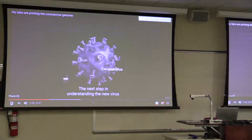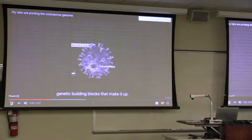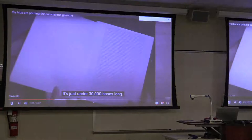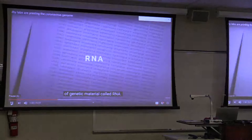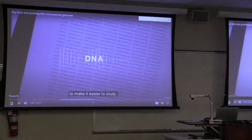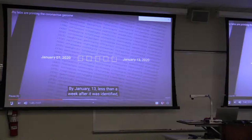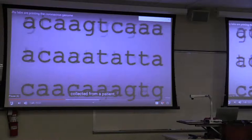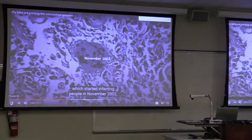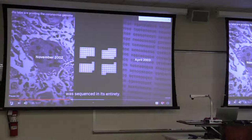The next step in understanding the new virus was sequencing its genome. Figuring out the unique order of nucleotides, genetic building blocks, that make it up. The new coronavirus genome looks like this. It's just under 30,000 bases long. The coronavirus is made of a type of genetic material called RNA. But scientists convert it to the more recognizable DNA to make it easier to study. That's what you're seeing here. By January 13th, less than a week after it was identified, scientists in Shanghai had mapped out the entire genetic sequence of a virus sample collected from a patient. Compared with the SARS virus, which started infecting people in November 2002, it took until April 2003 before that virus was sequenced in its entirety.